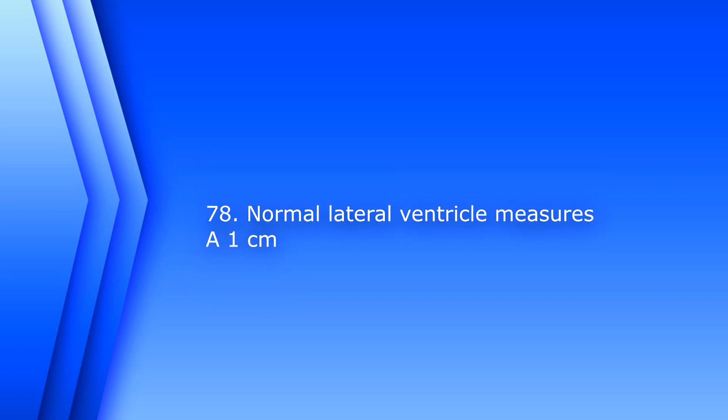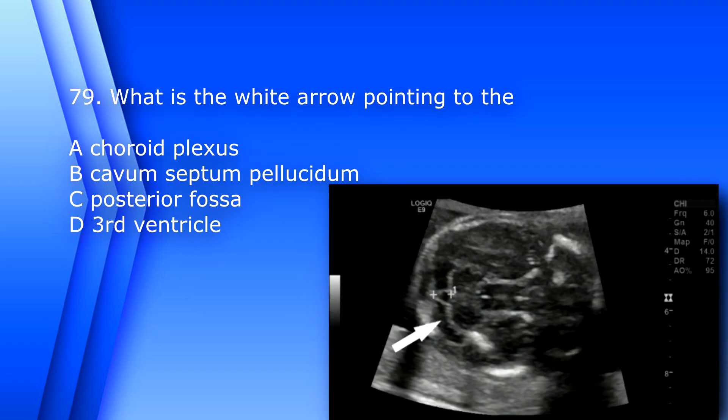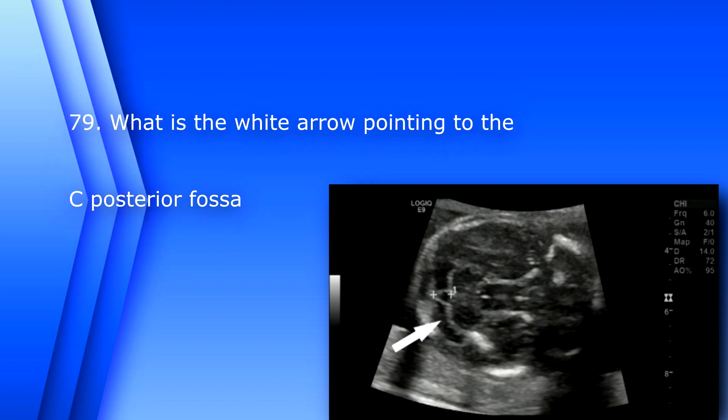Question 79. What is the white arrow pointing to? A. Choroid plexus. B. Cavum septum pellucidum. C. Posterior fossa. D. 3rd ventricle. The answer is C, posterior fossa.